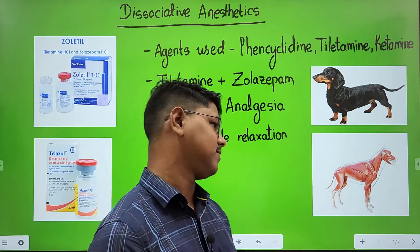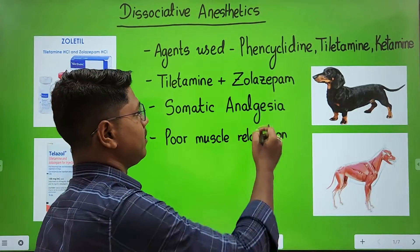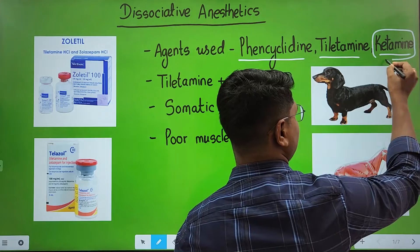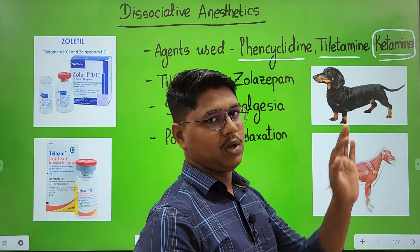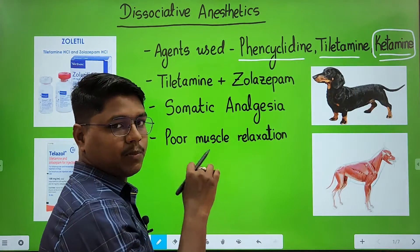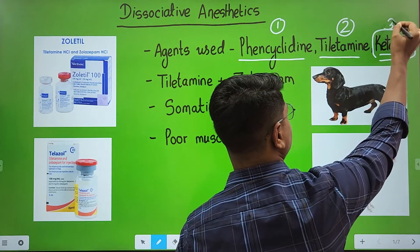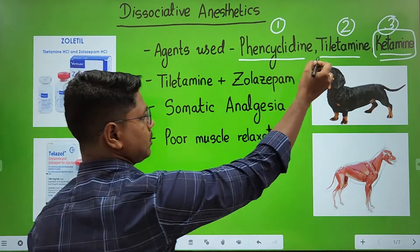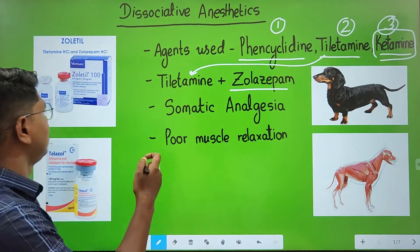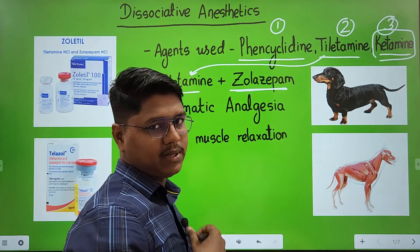The agents used as dissociative anesthetics are Phencyclidine, Tiletamine, and Ketamine. You are very familiar with Ketamine, because in almost all veterinary colleges of India you will find the use of Ketamine, whether combined with Xylazine or Diazepam. If you consider potency of these three drugs, Phencyclidine is most potent, then Tiletamine, and the least potent is Ketamine. But it is the most famous one. Tiletamine usually comes in combination with Zolazepam, which is a benzodiazepine, under the brand names Telazol or Zoletil — these contain Tiletamine and Zolazepam in a fixed combination.